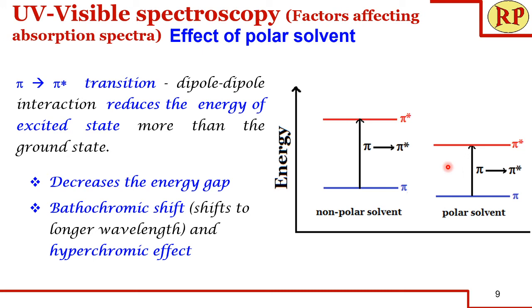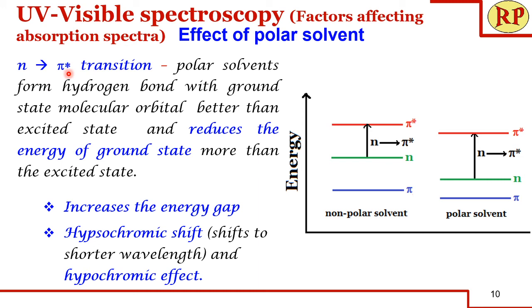Because the excited state energy is reduced much more than the ground state, the energy gap between ground state and excited state decreases, requiring less energy — so it shifts to longer wavelength, undergoing bathochromic shift accompanied by hyperchromic effect, with both lambda max and epsilon max increasing. But for n to pi* transition, polar solvents form a hydrogen bond with the ground state n orbital, stabilizing it more than the pi* orbital, so the n to pi* energy gap increases and it shifts to shorter wavelength — hypsochromic shift accompanied by hypochromic effect, with both lambda max and epsilon max decreasing.